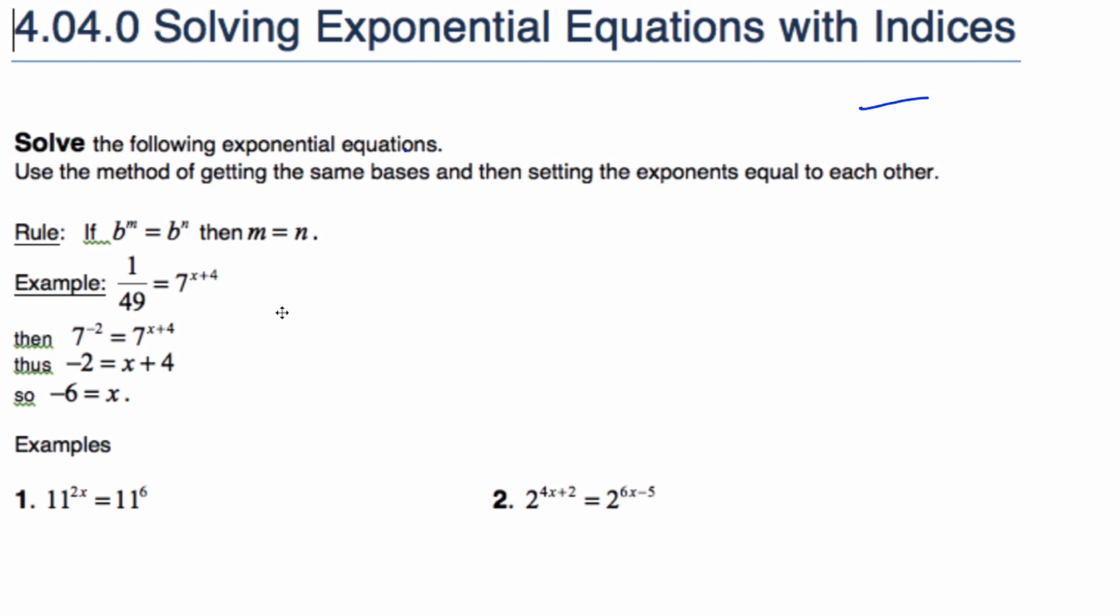And this is a special group of exponential equations that we can solve. Not all exponential equations can be solved this way, only ones that are kind of special. And the whole premise here is considering this: if we have a base to some exponent equal to the same base to some exponent, well, in order for these things to be equal, m must be equal to n.